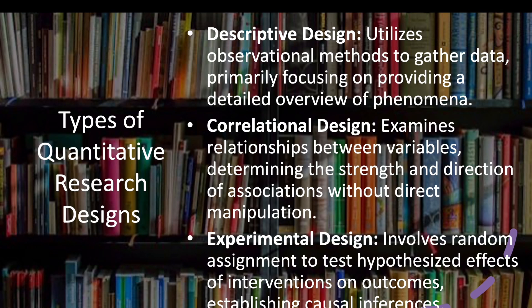Types of quantitative research: we have descriptive design, which is one of the common designs especially in your current study. It uses observational methods to gather data, primarily focusing on detailed overview of the phenomena. We also have correlational design, which examines relationships between variables, determining the strength and direction of association without direct manipulation.